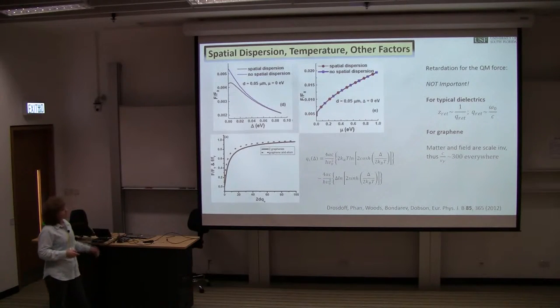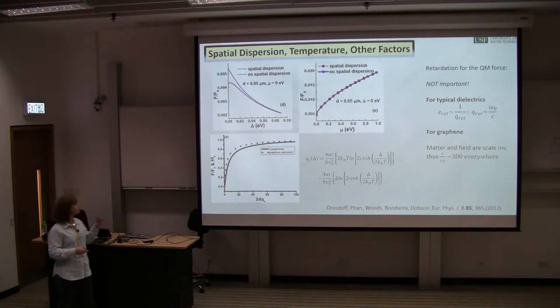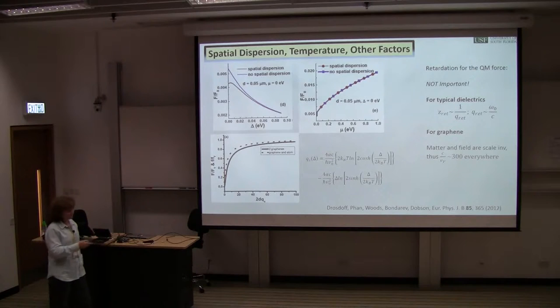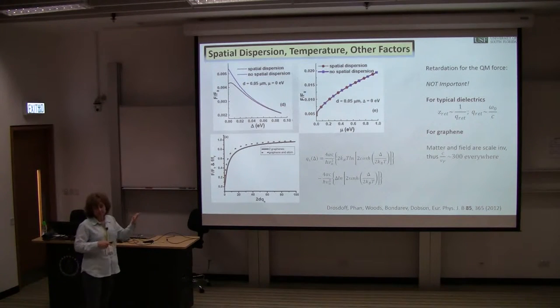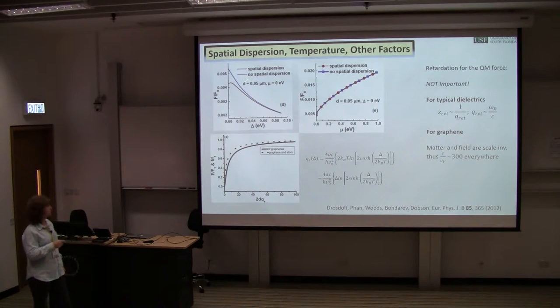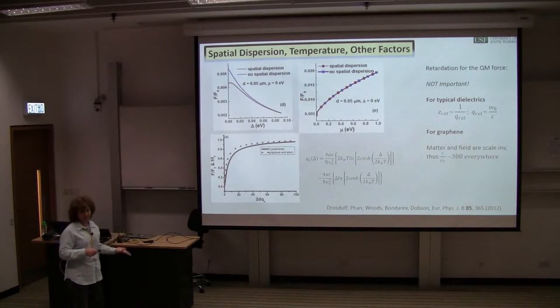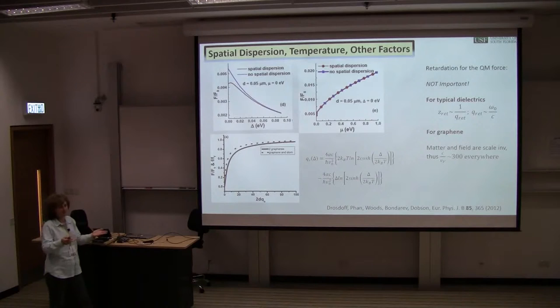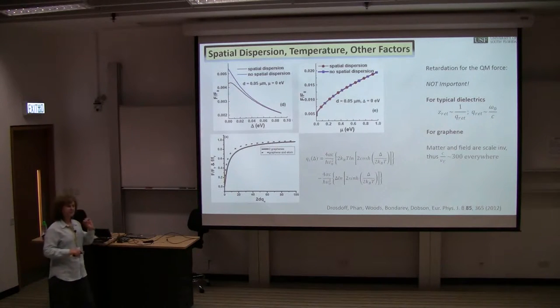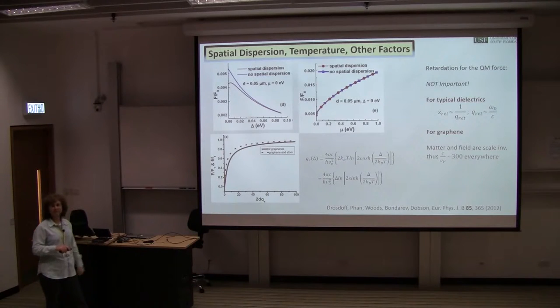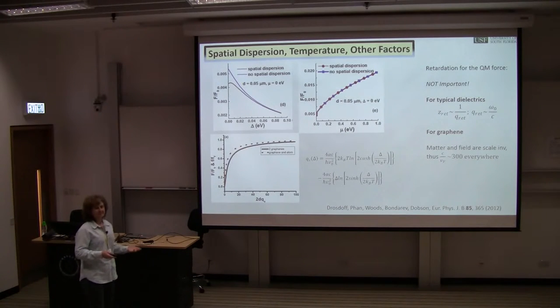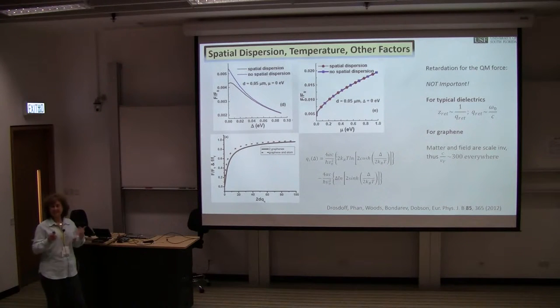It turns out that retardation is not important, but also spatial dispersion seems to be unimportant in most cases. If we now have a different chemical potential beyond zero, we also have a gap. If we introduce a gap into the Dirac model with some impurities or substrates, we can quantify the onset of thermal effects via this quantity. Now I have a tuning capability. I can enhance or inhibit thermal fluctuations based on this product between the distance and wave vector expression.